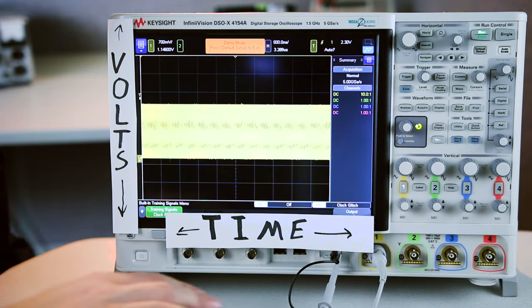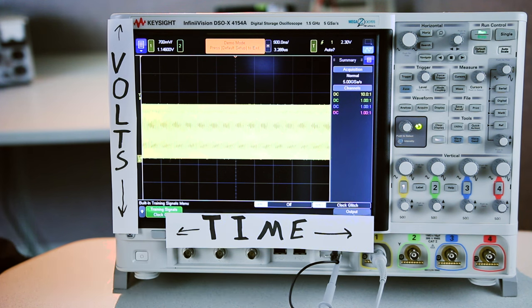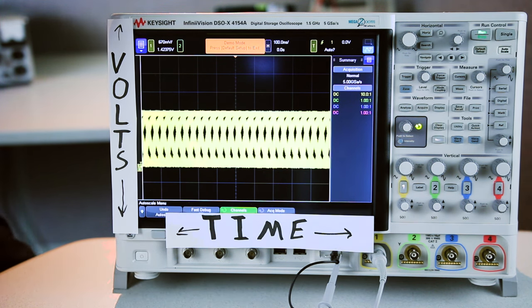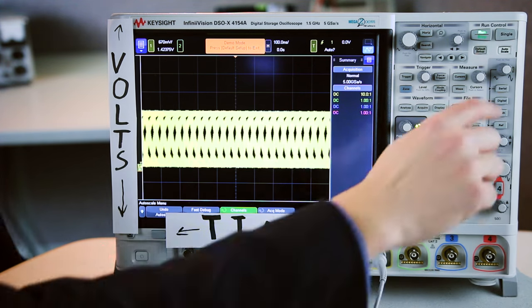So you walk into the lab, you take your probe, and you attach your signal for the first time and maybe you see something like this. What do you do? The easiest way to get from seeing a useless signal to a useful signal is the autoscale button.